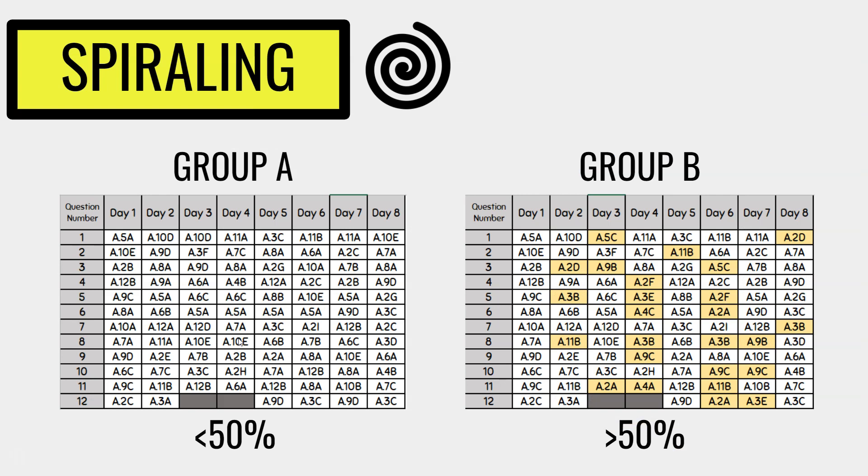Not only do we have a group A for our lowest students who scored less than 50% on average on the district checkpoints, but there is also a second set of spiraling review worksheets for group B, which is that set of students that average more than 50% on their four district checkpoints. You will notice the difference between these is the number of times the bang for your buck questions are asked.